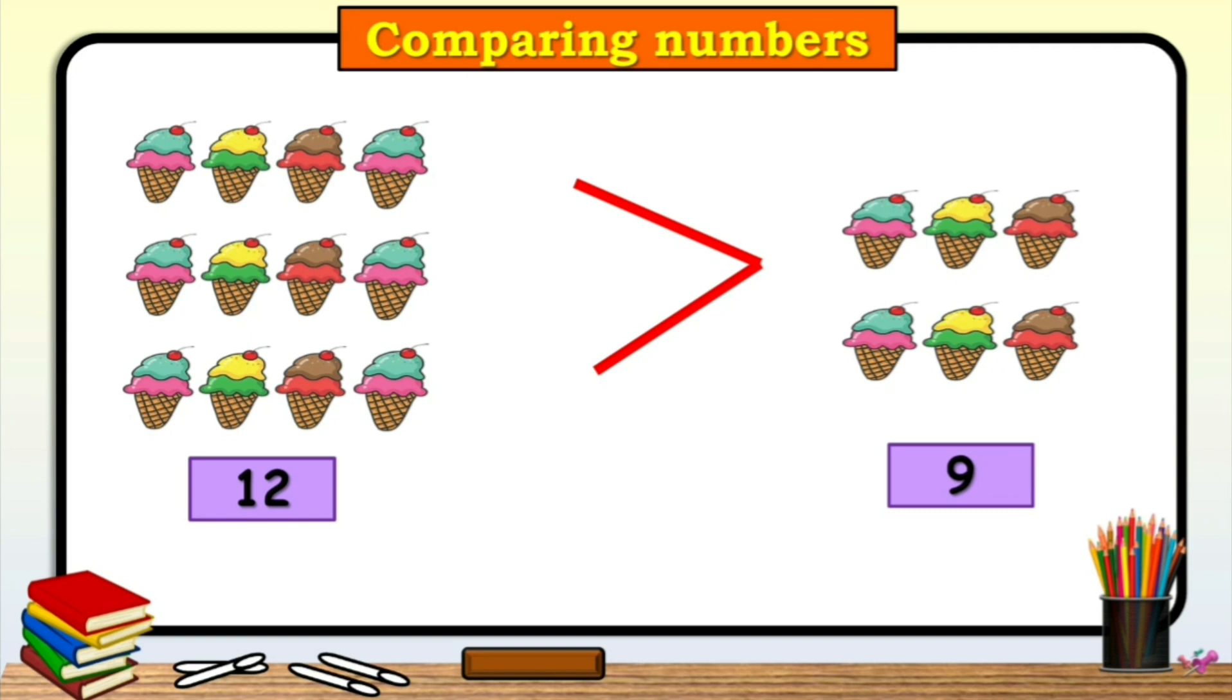Children, there is a trick to find out which number is greater. So, to find out greater number, we have to count digits of a number. If a number has more digits than the other, it is the greater of the two. So, here number 12 has two digits and number 9 has only one digit. That's why number 12 is greater.